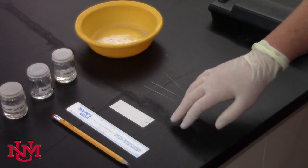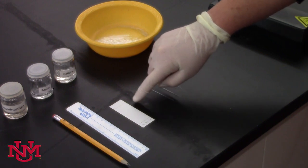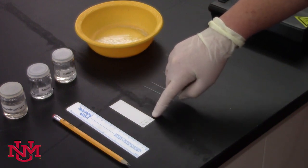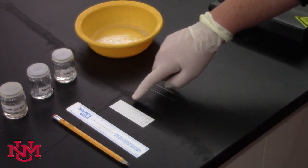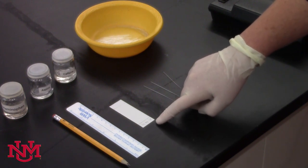You never want to use ink, you always want to use pencil. You'll mark your TLC plate with two lines, about a centimeter from the bottom and a centimeter from the top.